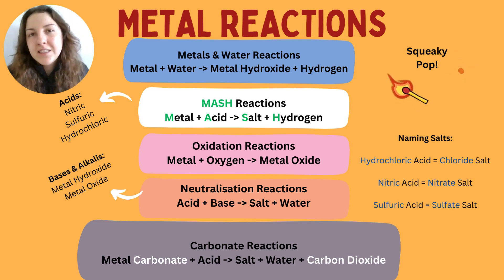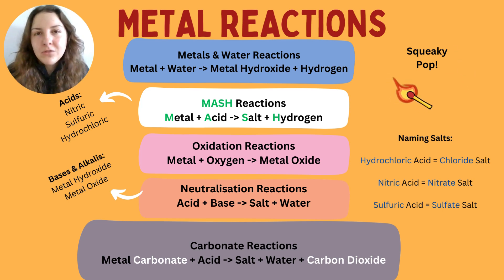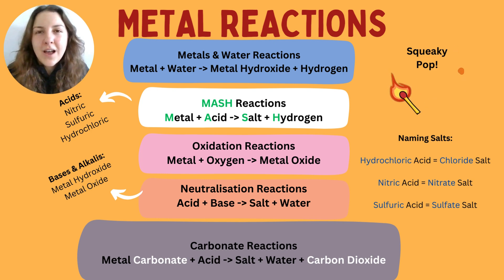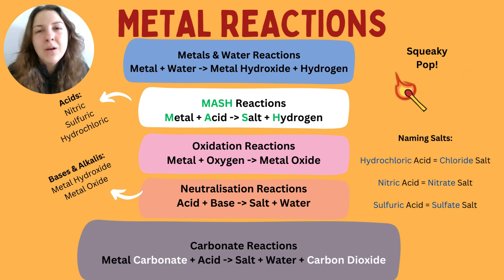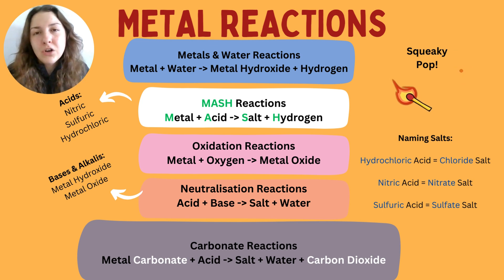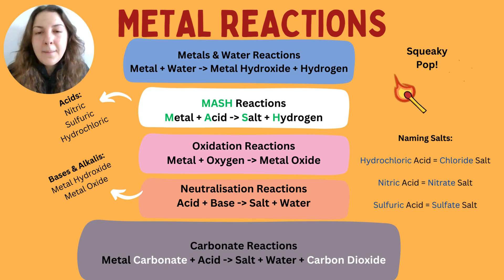You name the salt based on the acid, with the metal name placed in front of the acid-derived name. I'll leave some practice examples in the description box below. Those are the three main acids you'll encounter at GCSE — there are more, but hydrochloric, nitric, and sulfuric are the key ones they like to ask about.